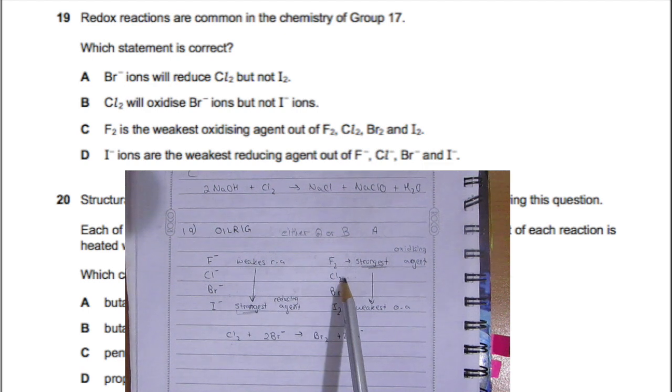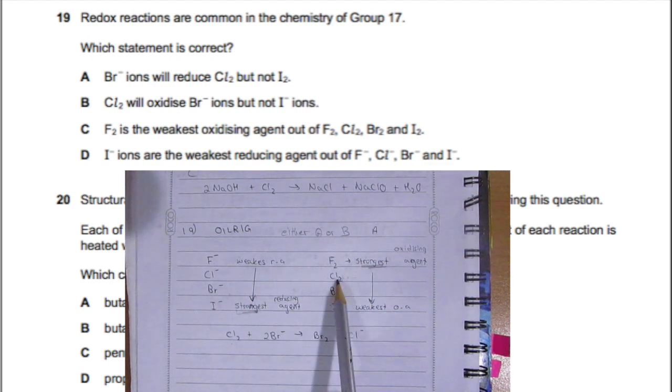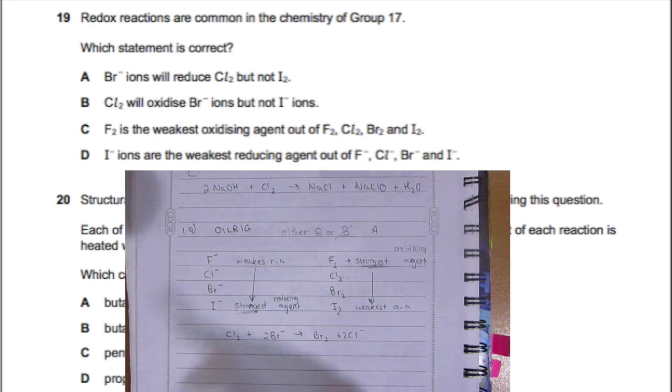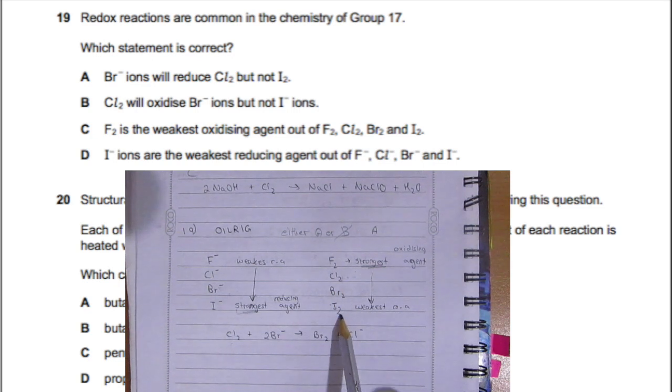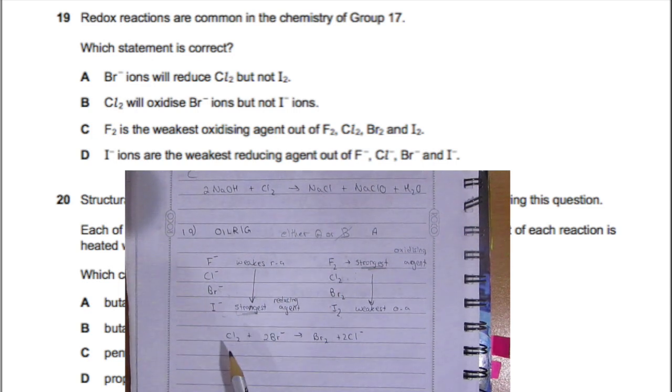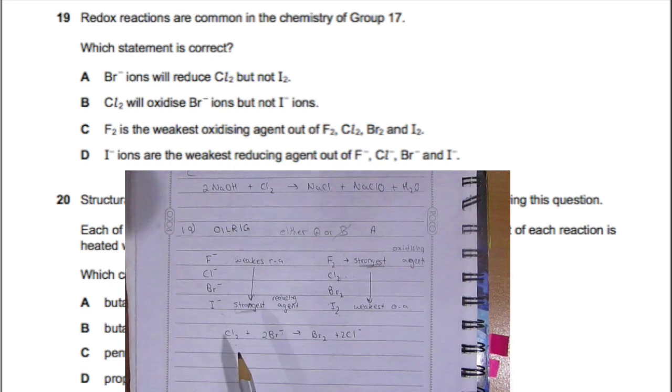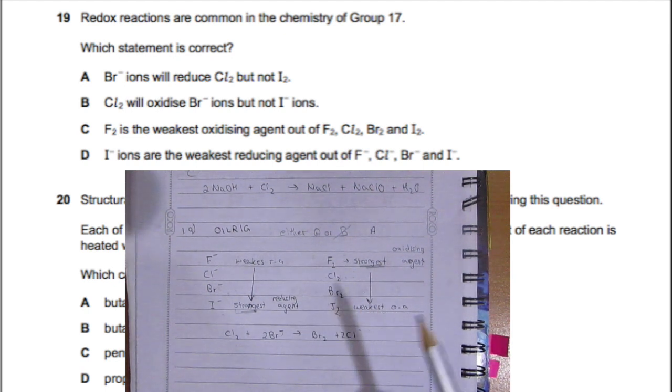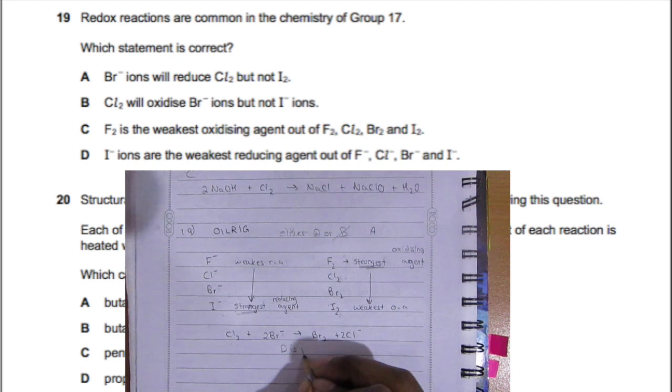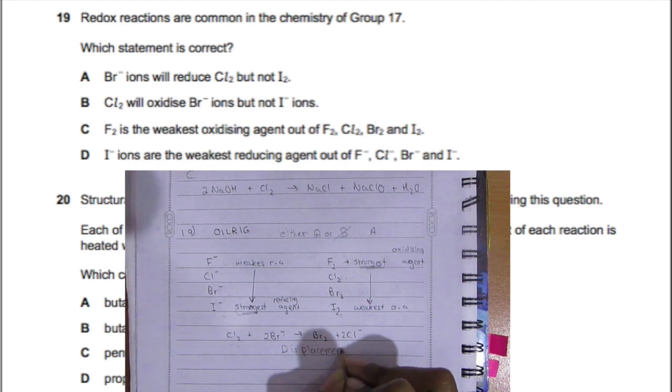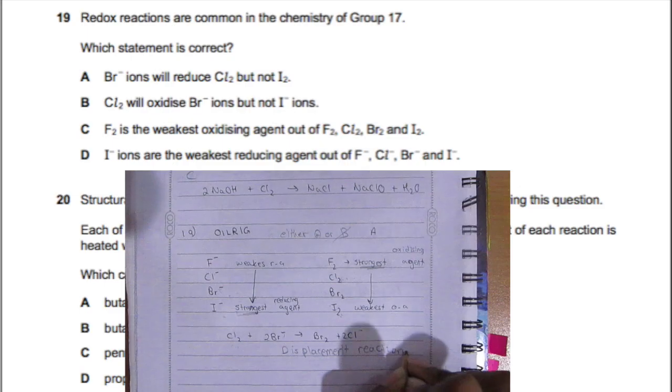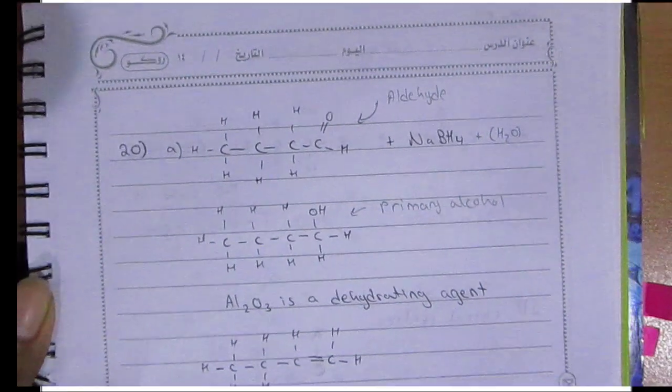However, iodine is less reactive than the bromide ion, so it won't displace it—no reaction. Part A is correct. B: Chlorine will oxidize bromine ions but not iodine ions—not true. It will oxidize both because chlorine is more reactive. C: Chlorine is the weakest oxidizing agent—not true, it's the strongest. D: Iodide ions are the weakest reducing agent—no, they're the strongest. The only possible answer is A.